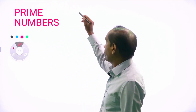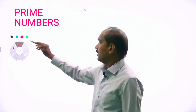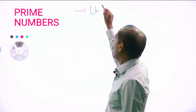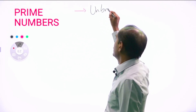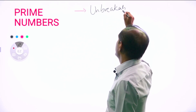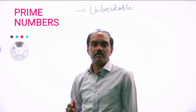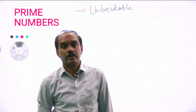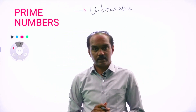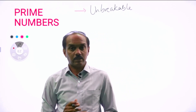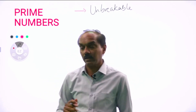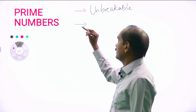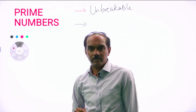Prime numbers are basically unbreakable numbers. You cannot break them into pieces. Ten can be broken into pieces — five into two. But five, you cannot break. Three, you cannot break. Seven, you cannot break. They are called unbreakable numbers.